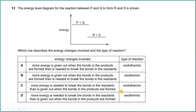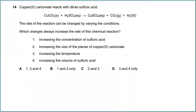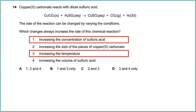Question thirteen: the energy level diagram for the reaction between P and Q to form R and S is shown. More energy is given out when bonds in the products form than is needed to break the bonds in the reactants — this describes an exothermic reaction. Question fourteen: copper(II) carbonate reacts with dilute sulfuric acid. Which changes always increase the rate of reaction? The answer is 1 and 3: increasing the concentration of sulfuric acid and increasing the temperature.